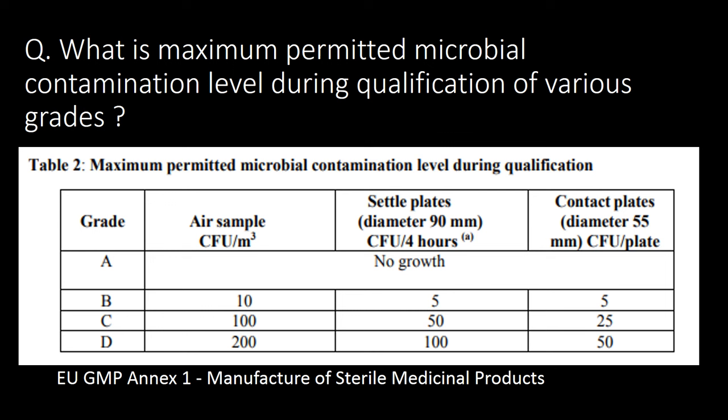What is the maximum permitted microbial contamination level during qualification of various grades such as Grade A, Grade B, Grade C, and Grade D? You can refer to the table below for maximum permitted microbial contamination levels during qualification. This table is from EU GMP Annex 1: Manufacture of Sterile Medicinal Products.